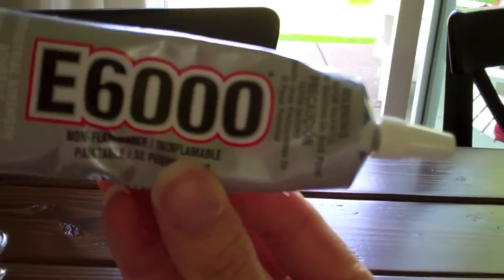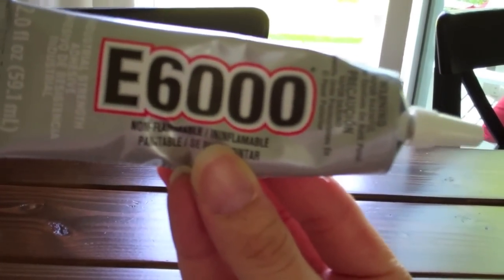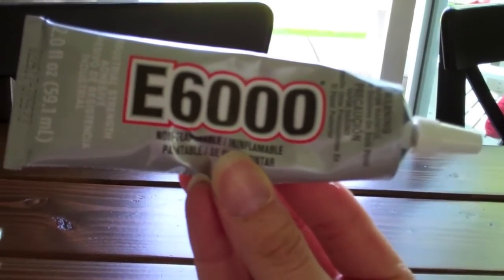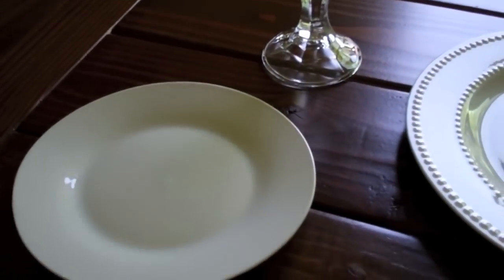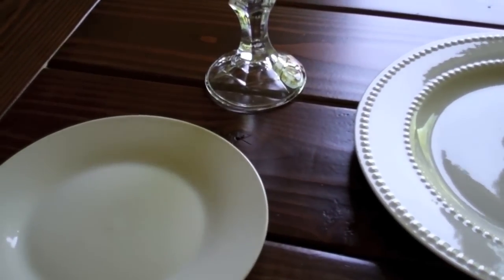And then this E6000 kind of glue, industrial strength glue, you will need that too. This was not bought at the dollar store. I'm not sure if they have that. I just already had it. So that's what I'm going to use. I also washed up my plates because some of their plates that have been sitting on the shelves for a while get dusty.